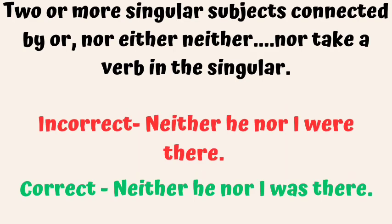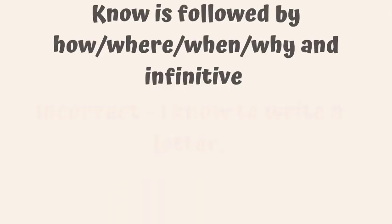Two or more singular subjects connected by or, nor, either, neither, nor take a verb in the singular. For example, 'Neither he nor I were there' is incorrect. 'Neither he nor I was there' is correct.